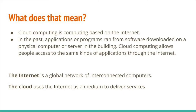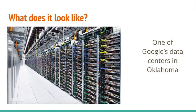Sometimes people get the terms internet and cloud confused. What the internet is is an actual global network of interconnected computers. The cloud uses the internet as a medium to deliver the services — we use the internet to get to the services that are on the cloud. This is a photo of one of Google's data centers in the state of Oklahoma. It's just a very large warehouse with a ton of computer servers all hooked into the internet, and a lot of web traffic and storage goes through data centers such as this.